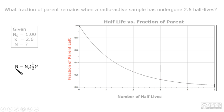By using this equation, N equals NO times one-half to the power of X, we can find the fraction of parent left. We just substitute our given values into the equation and calculate. And we get a value of 0.165.